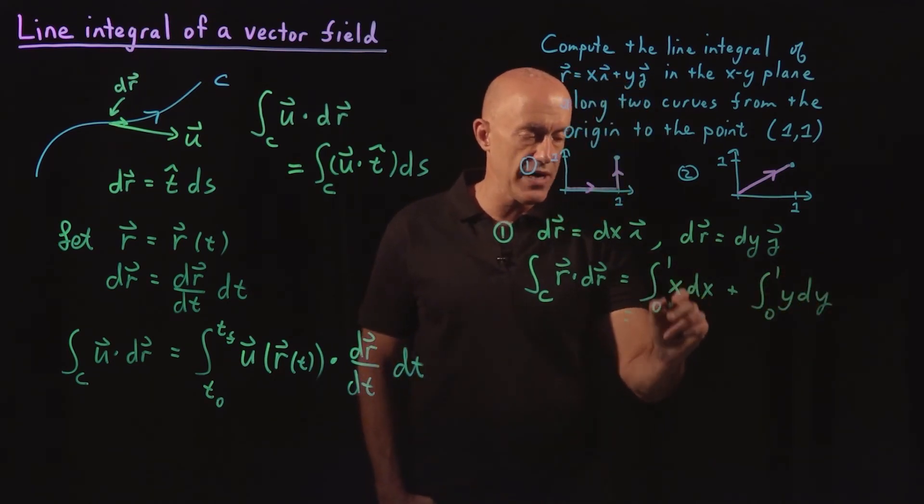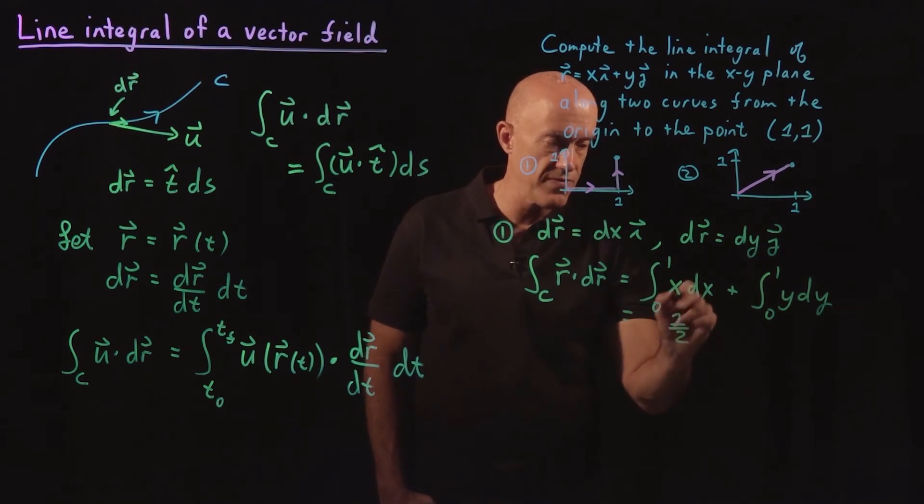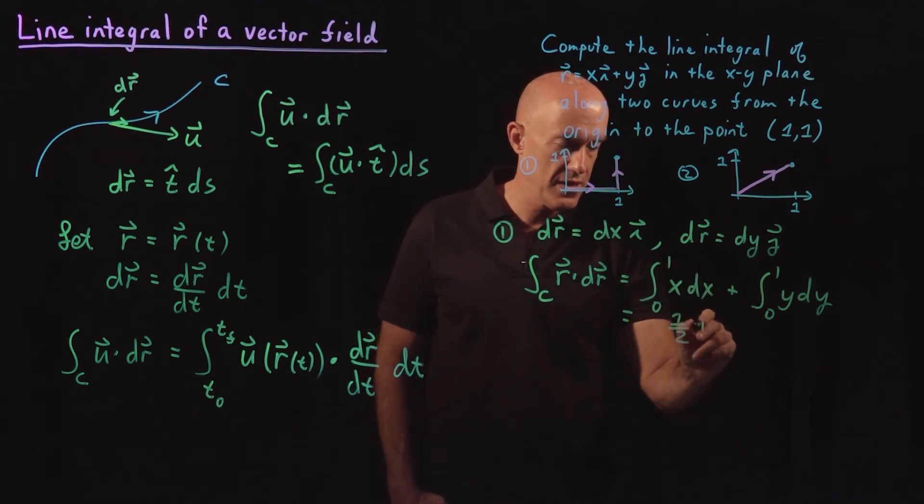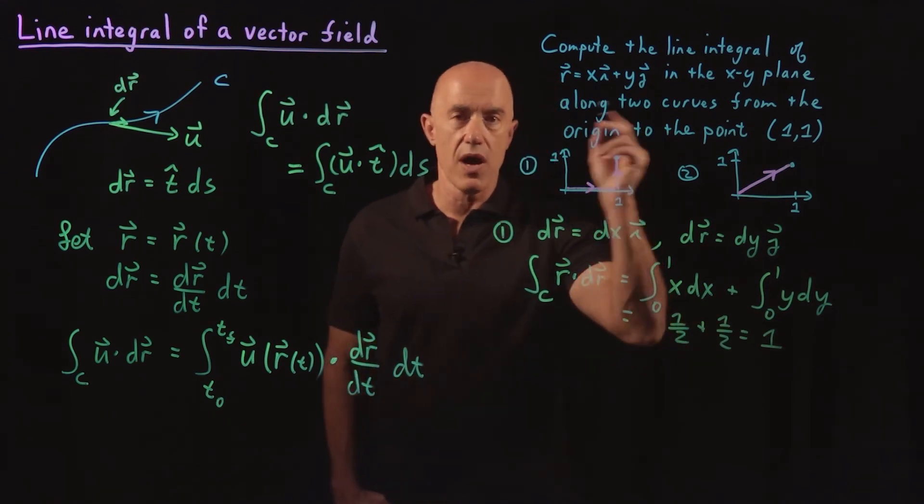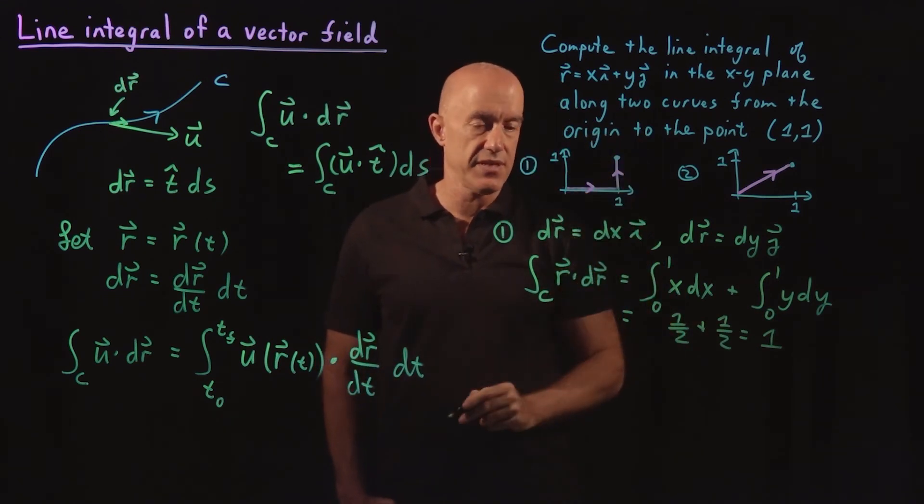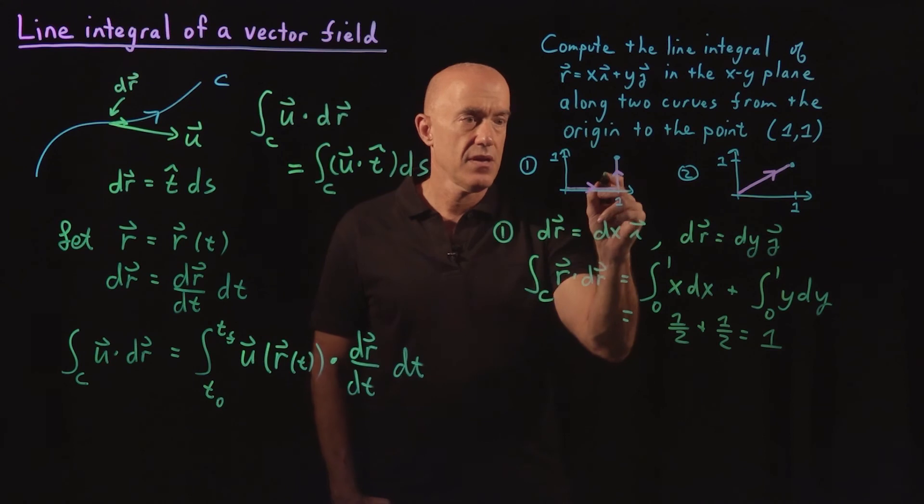So this is 1/2, x squared over 2, evaluated between 0 and 1. This one is also 1/2, and then the sum is 1. So this line integral is 1, both of them consisting of 1/2.